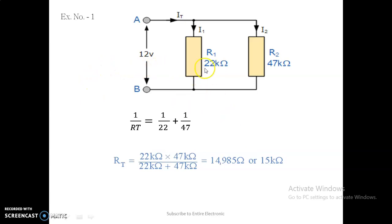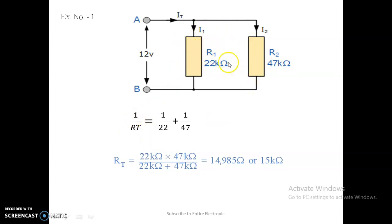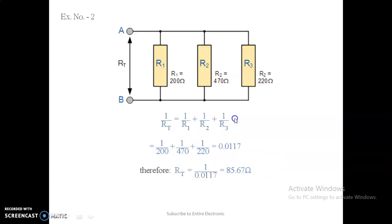In the first example, we have to find the equivalent resistance of a circuit supplied with a 12-volt battery, where two resistances are connected in parallel. Current travels from point A to point B and gets divided between the two branches (i1 and i2), confirming they are in parallel. So 1/Rt = 1/R1 + 1/R2 = 1/22 + 1/47 kilo-ohm, and the answer is 15 kilo-ohm.